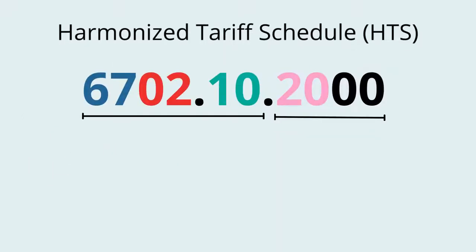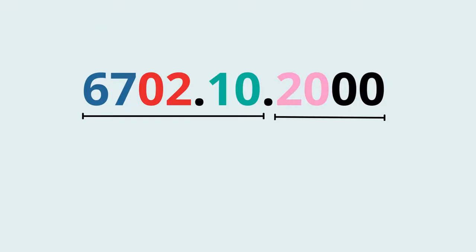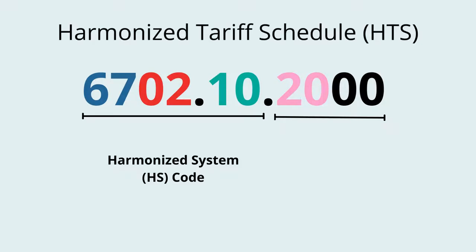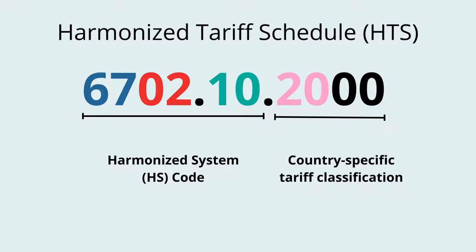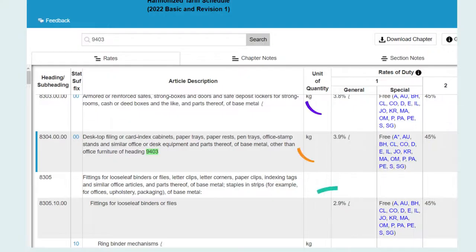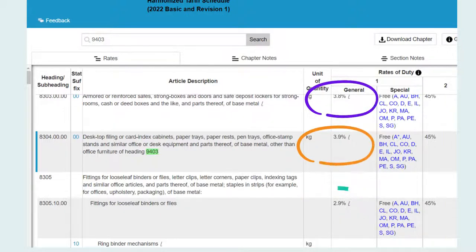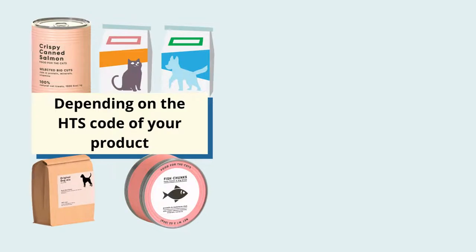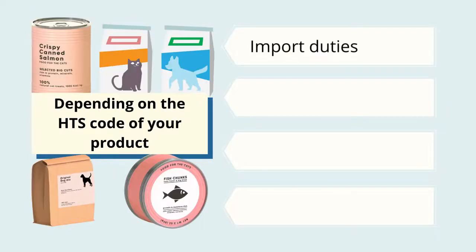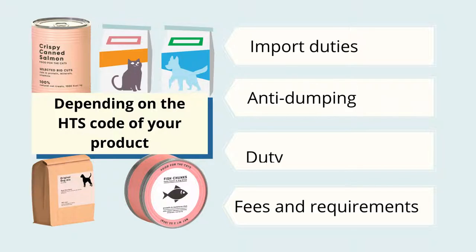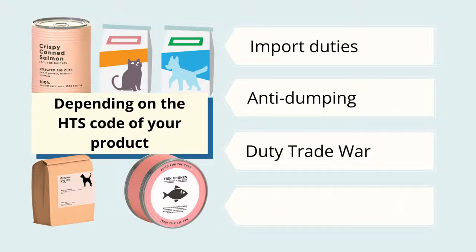The harmonized tariff schedule code can be looked at in two parts. The first six numbers are made up of the HS code, used by both US Customs and all World Customs Organization members. The additional one to four digits serve to notate country-specific tariff classification. Each HTS code will have a different import duties rate and specific import requirements. Depending on the HTS code of your product, US Customs and CBP will apply import duties, anti-dumping, duty trade war, and any fees or requirements that you need to pay.